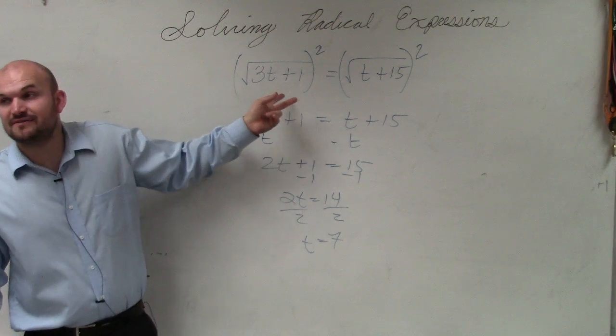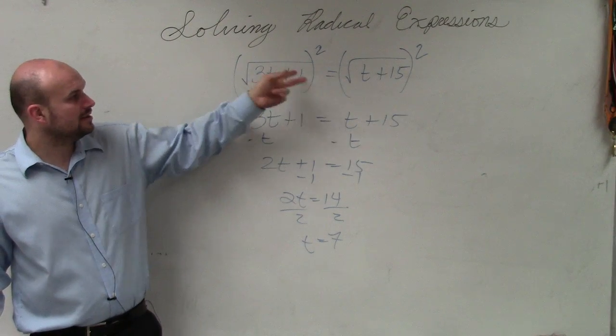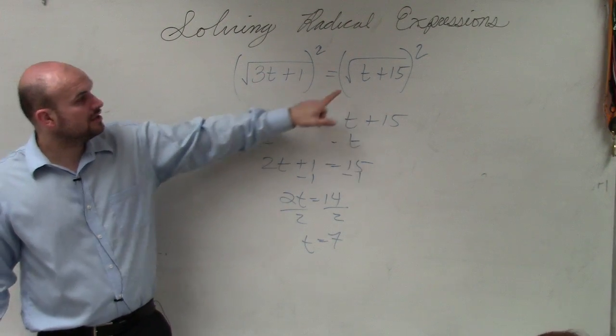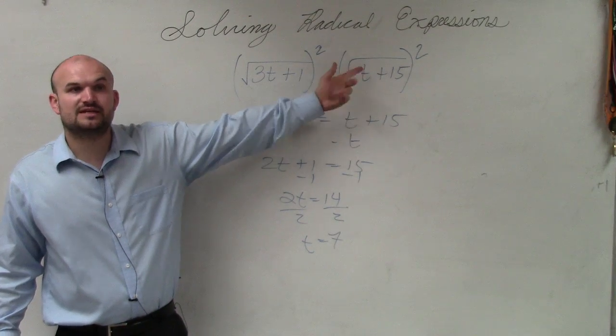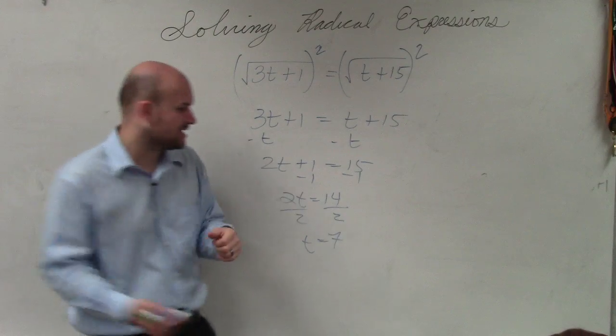If I plug in a 7, 3 times 7 is 21 plus 1 is square root of 22. Over here, 7 plus 15 is square root of 22. So we have square root of 22 equals square root of 22. It checks out. That works.